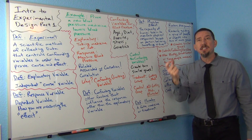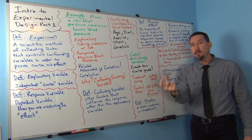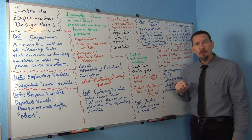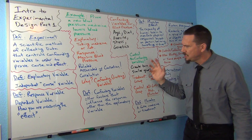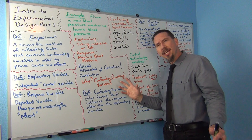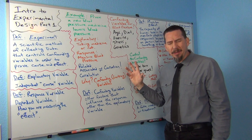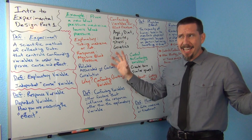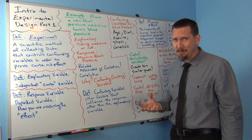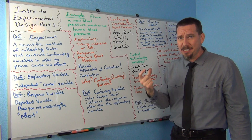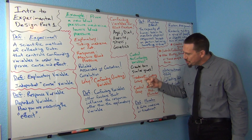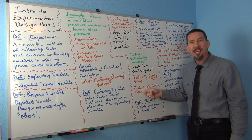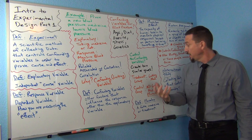Think of an experiment as collecting data in a special way that creates two very similar groups to compare. Some students say you can't experiment on people, but that's associating experiments with mad scientists in movies. A scientific experiment is really just about comparing two groups of people that are very, very alike. That's the whole idea.